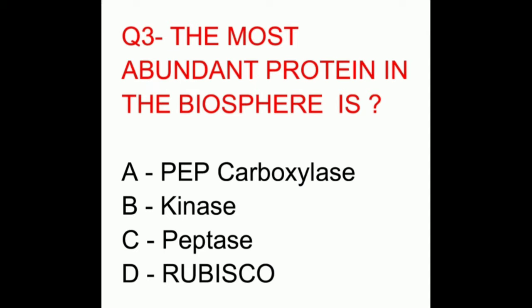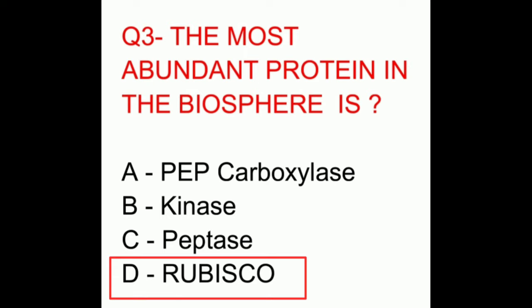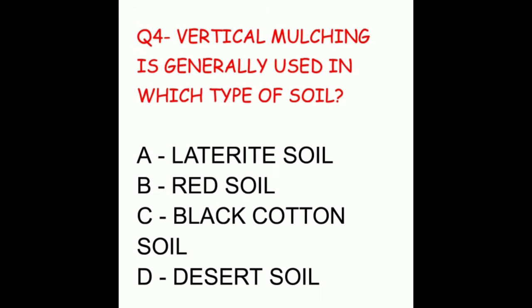Question three: the most abundant protein in the biosphere is. The options are PEP carboxylase, kinase, peptase, or RuBisCO. The correct answer is RuBisCO.